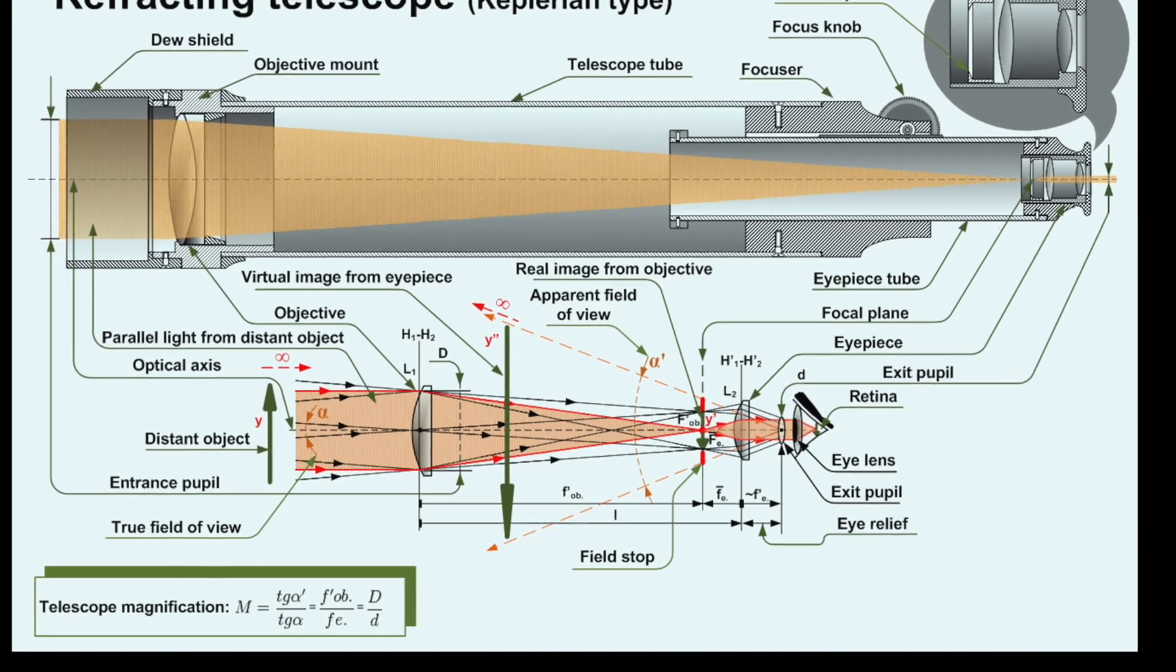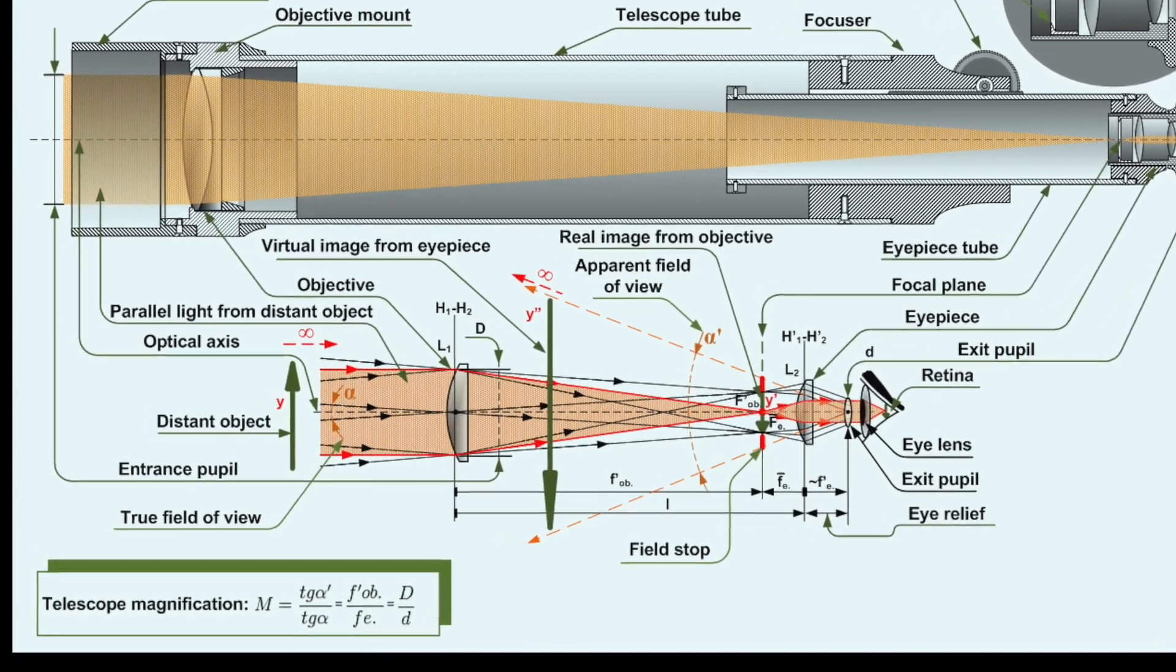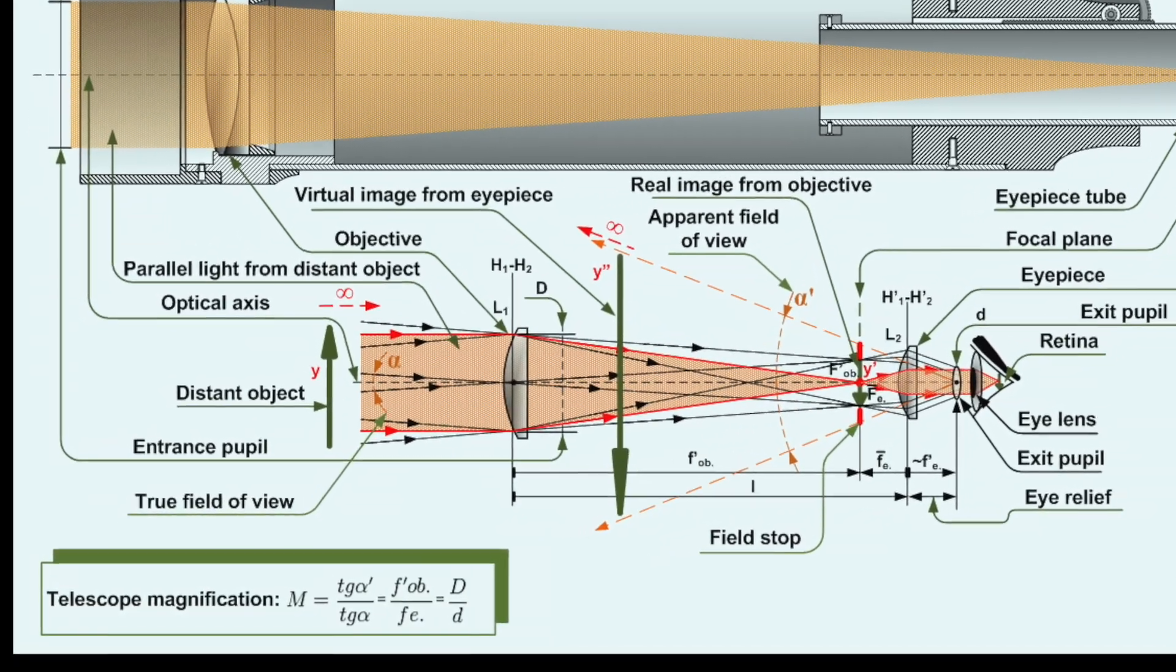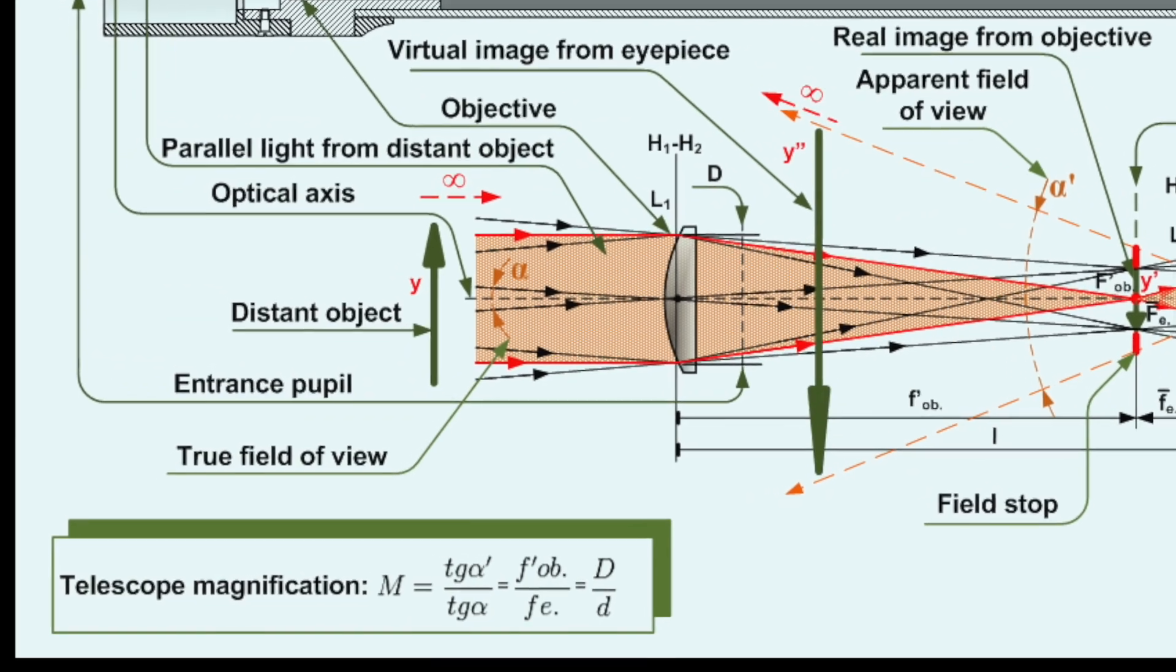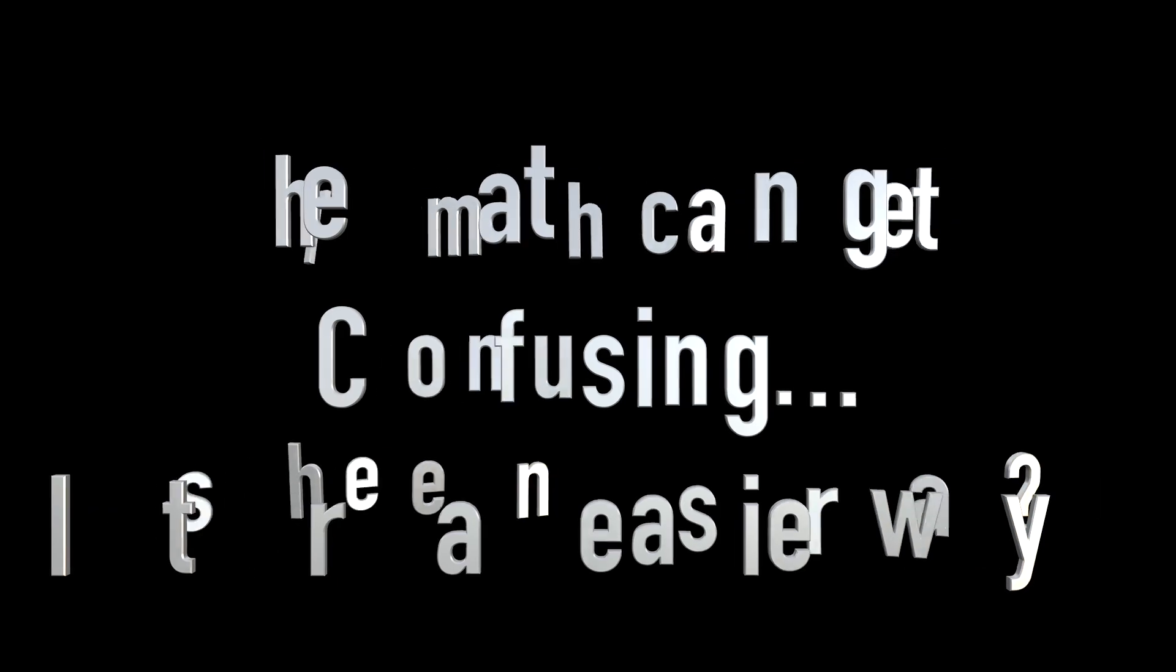Basically, longer focal length is a narrow angle of view and this equals higher magnification. The shorter the focal length, the wider the angle of view equals lower magnification. Let's do a quick home experiment.